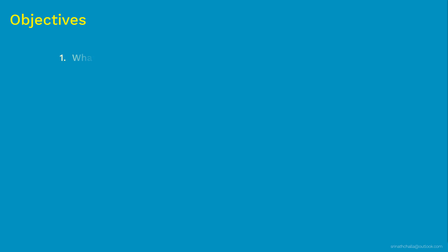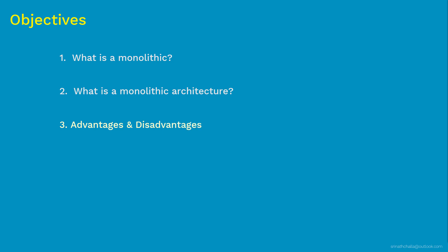Coming to the primary objectives of this video, there are four major things that we'll discuss. First, we'll discuss what is monolithic in general. This will help you understand and connect to the next thing we are about to discuss, which is what is monolithic architecture in IT. Then we'll see some of the important advantages and disadvantages of monolithic architecture. And finally we'll discuss one of the major challenges that led to shift our focus from monolithic architecture to microservices architecture.